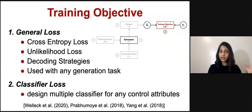There are other general losses like the unlikelihood loss, which basically makes sure that you don't repeat the tokens in your generations. And these losses can be used with any task, any generation task.